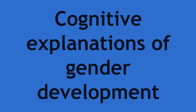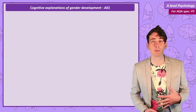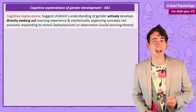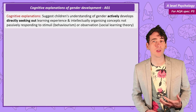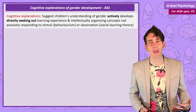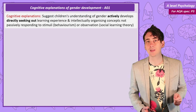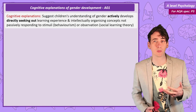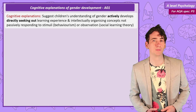Before I discuss the two cognitive theories, we need to understand that both these cognitive theories think gender development happens actively. This means as children process information and as they mature, they are more able to mentally consider what gender is, and they want to interact with the world to develop expectations of how gender applies to them and the people around them.